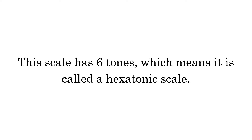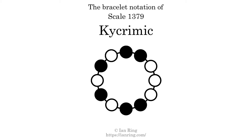This scale has 6 tones, which means it is called a hexatonic scale. This is a bracelet notation diagram of scale 1379. The shaded circles represent tones that appear in the scale, and they are read clockwise, starting at the top.